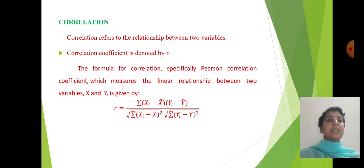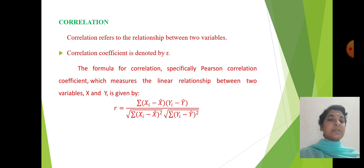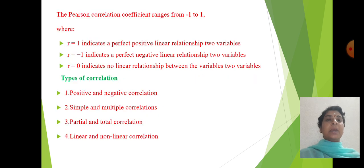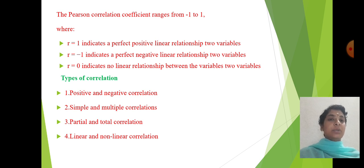Correlation refers to the relationship between two variables, denoted by R. The formula of correlation is the sum of (xi minus x-bar) times (yi minus y-bar), divided by the square root of the sum of (xi minus x-bar) squared, times the square root of the sum of (yi minus y-bar) squared. The correlation coefficient ranges from minus 1 to plus 1, where R = +1 indicates perfect positive correlation, R = -1 indicates perfect negative correlation, and R = 0 indicates no relation between the two variables.